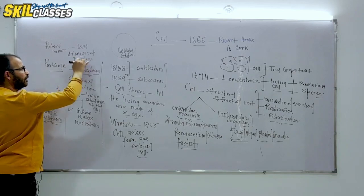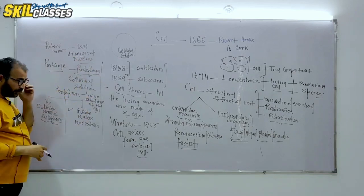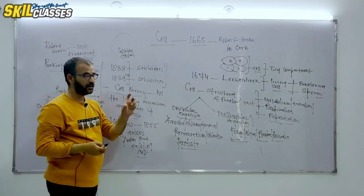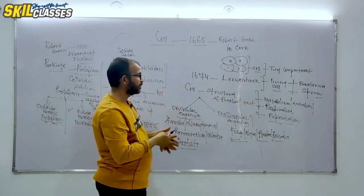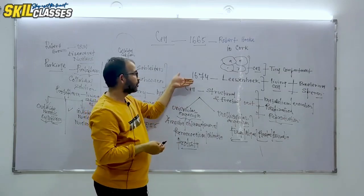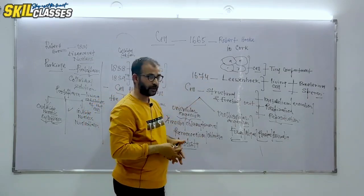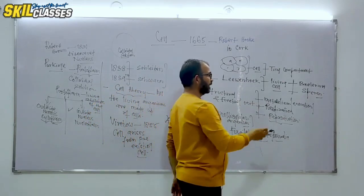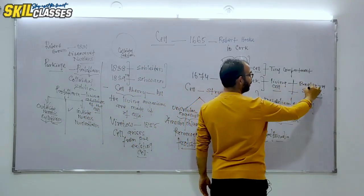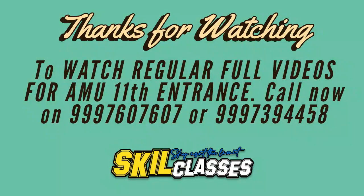We will talk about each organelle, but for now, these small points I'm telling you. Cell was discovered in 1665 by Robert Hooke, who called them tiny compartments. Further, in 1674, Leeuwenhoek discovered living cells. Your NCERT writes living cell, bacterium in rain water.